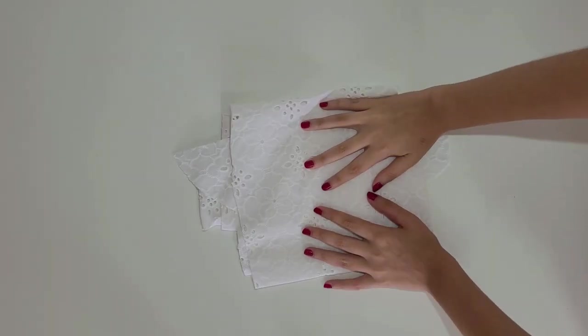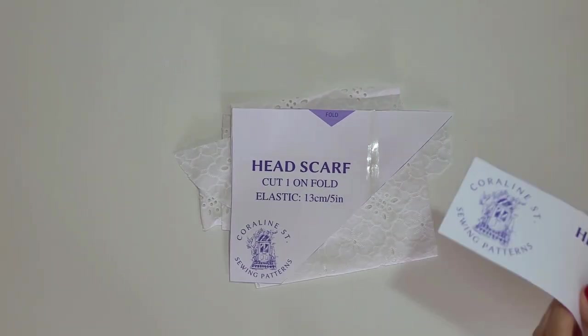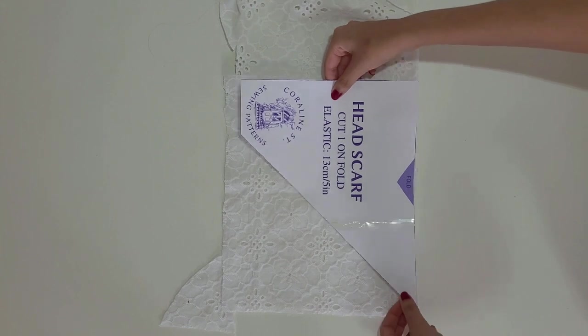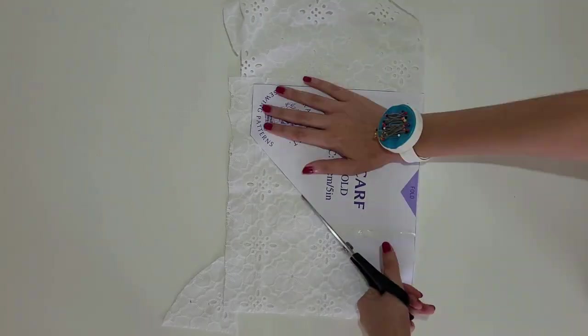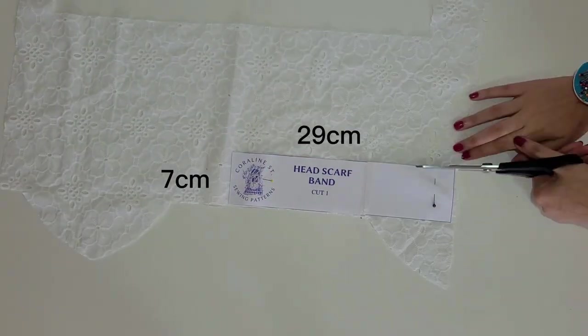For this project I'm using leftover fabric from this dress I made. If you want to check the full tutorial on it, I'll link the video in the description. All you have to do is fold your fabric in half and place the pattern piece on the fold. You will also need a band piece and a bit of elastic.